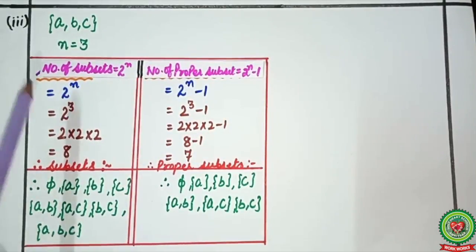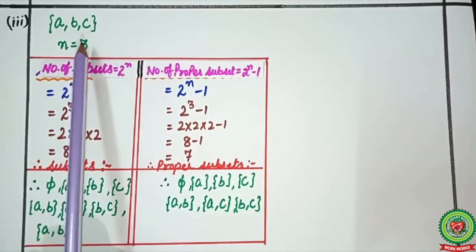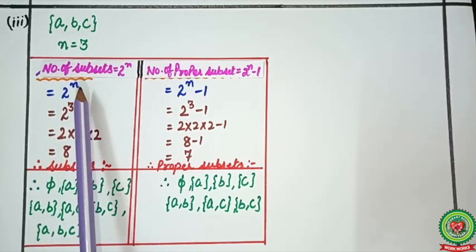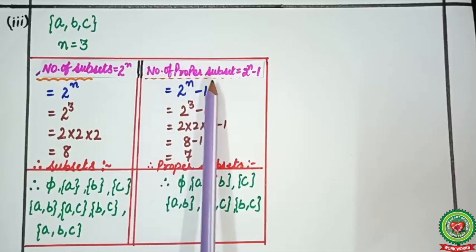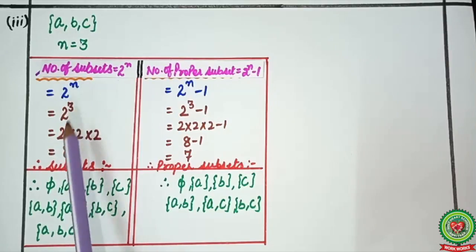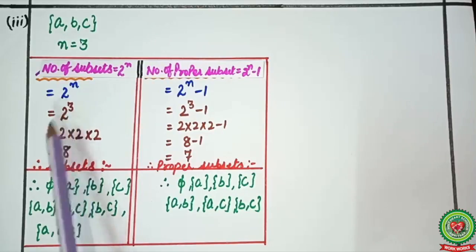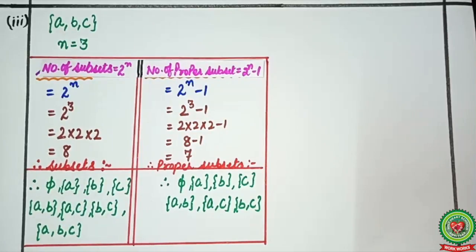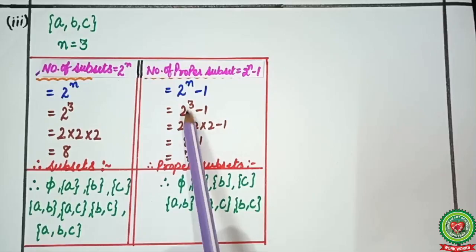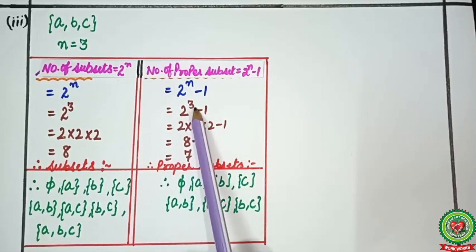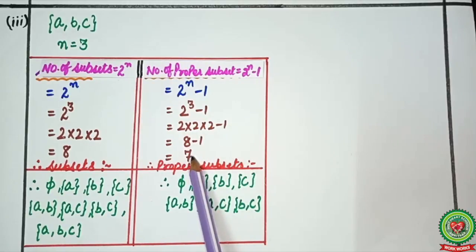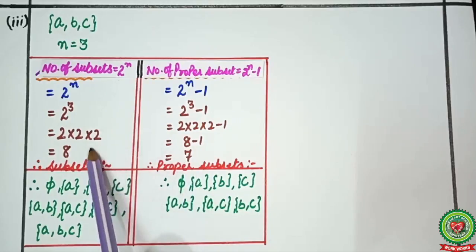Now for the example {A, B, C}: the number of elements is 3, so n = 3. Number of subsets = 2^3 = 2 × 2 × 2 = 8. Number of proper subsets = 2^3 − 1 = 8 − 1 = 7. So again, one subset less — you are getting 8 subsets and 7 proper subsets.